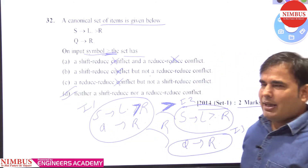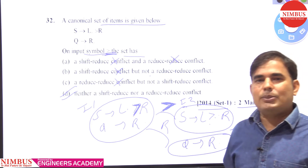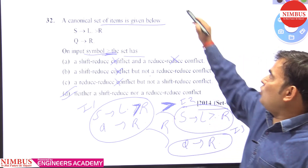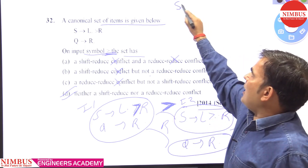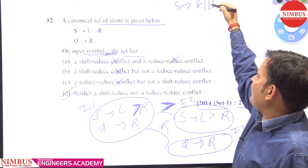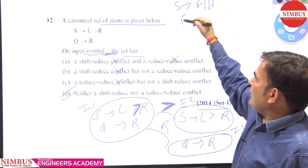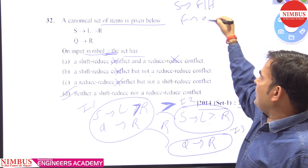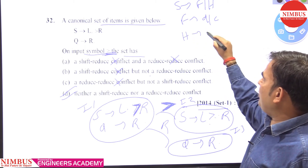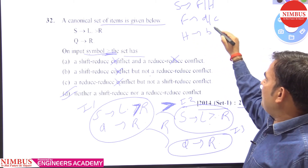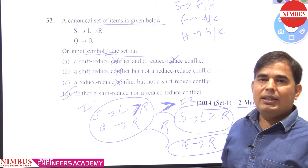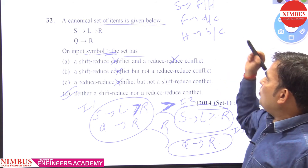Now I'm taking an example to explain what reduce-reduce conflict is. If you have a grammar like this: X tends to f or h, F tends to d or c, and S tends to b or c.